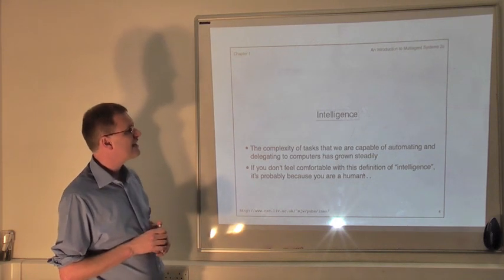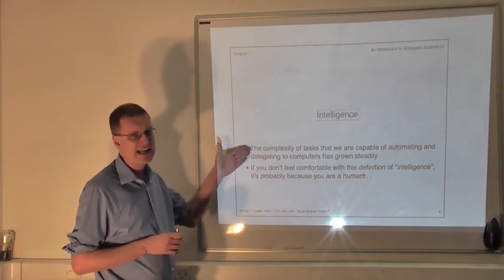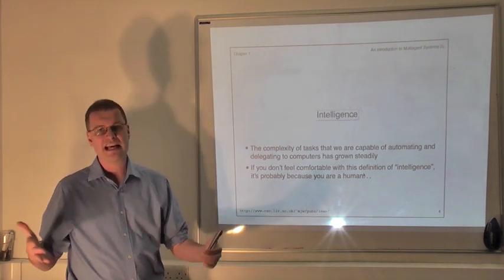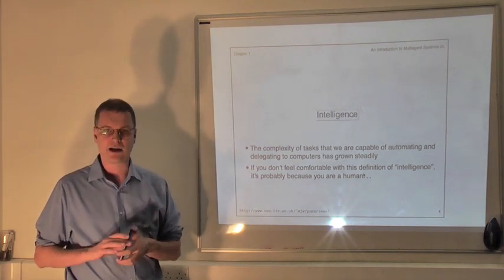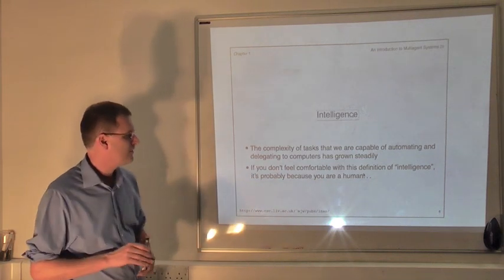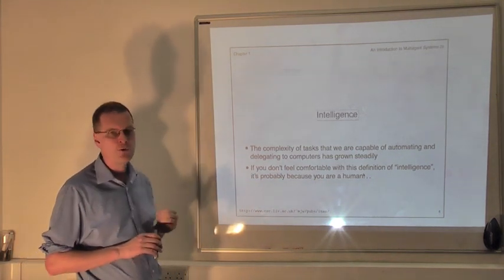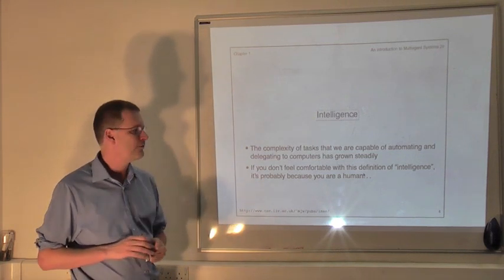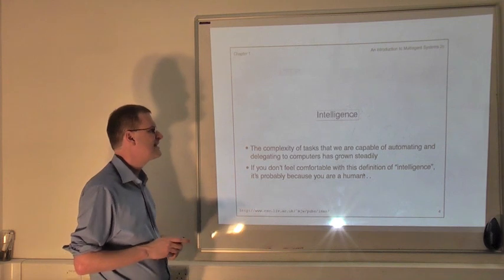What I mean here is just the idea that the complexity of the tasks that we can get computers to perform grows steadily year on year. Unlike Moore's law, this isn't an exponential growth. So the complexity of tasks that we are capable of automating and getting computers to solve for us grows steadily year on year. So that's intelligence.